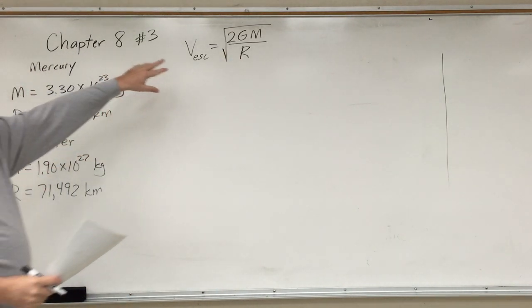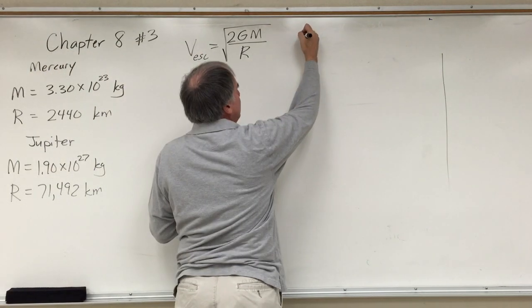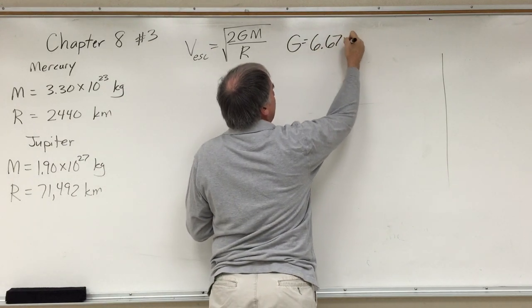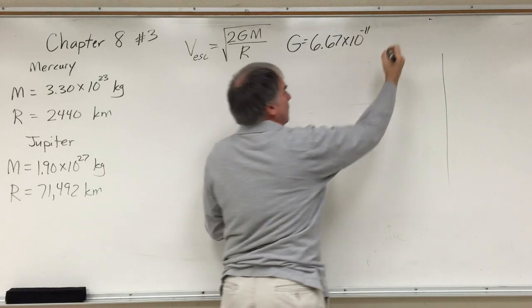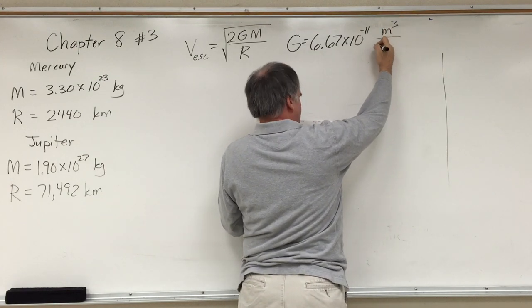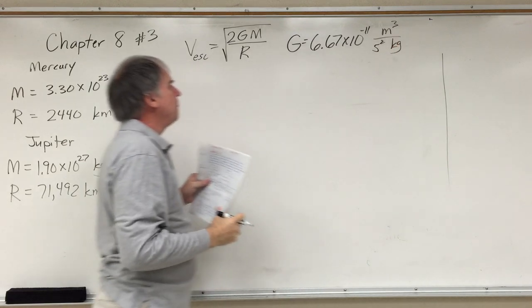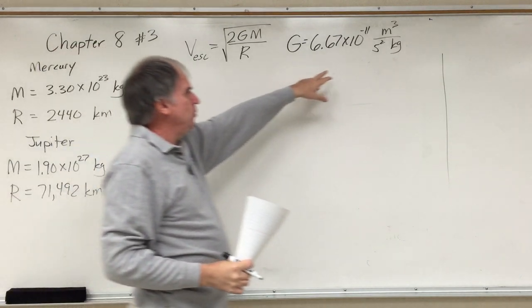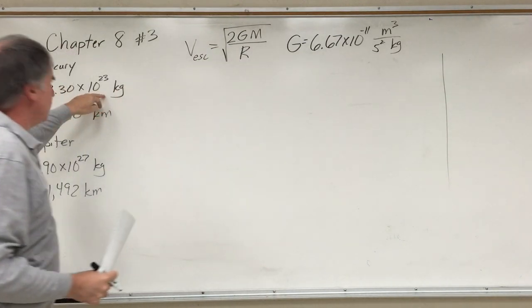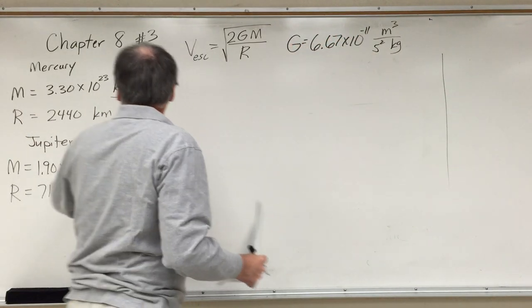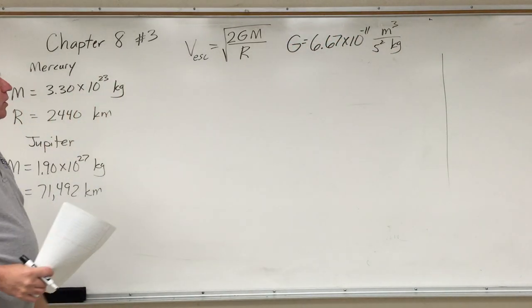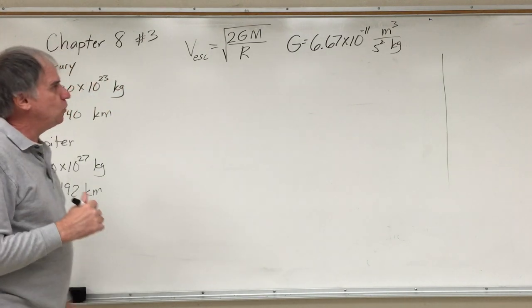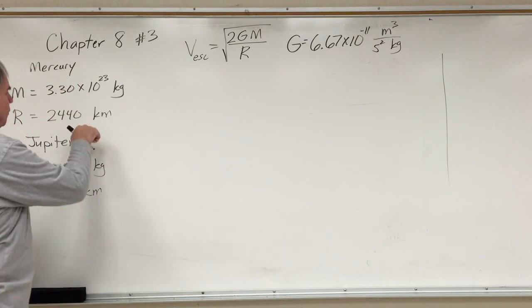Masses and radii we've looked up for these. The capital G is the gravitational constant. We've seen that before. The number 6.67 times 10 to the minus 11 meters cubed per second squared times kilogram. The G value has kilograms. Here's kilograms. G is in meters. Our radius is in kilometers. So we're going to have a collision of units.